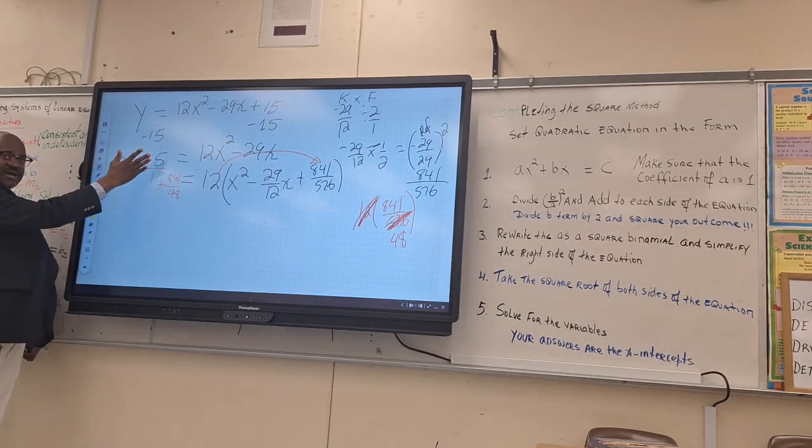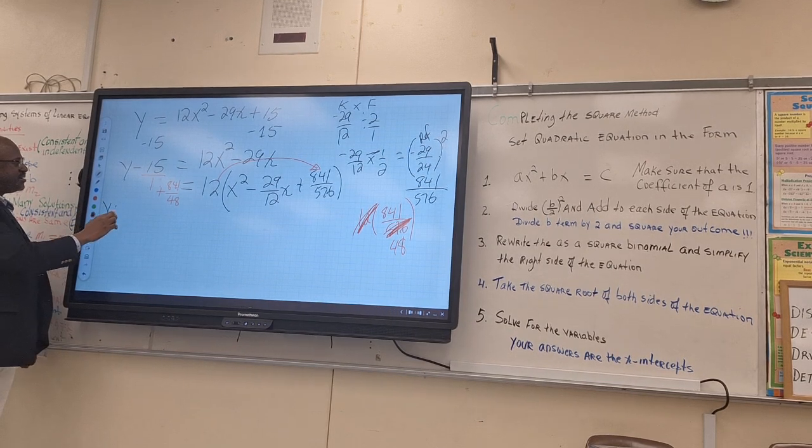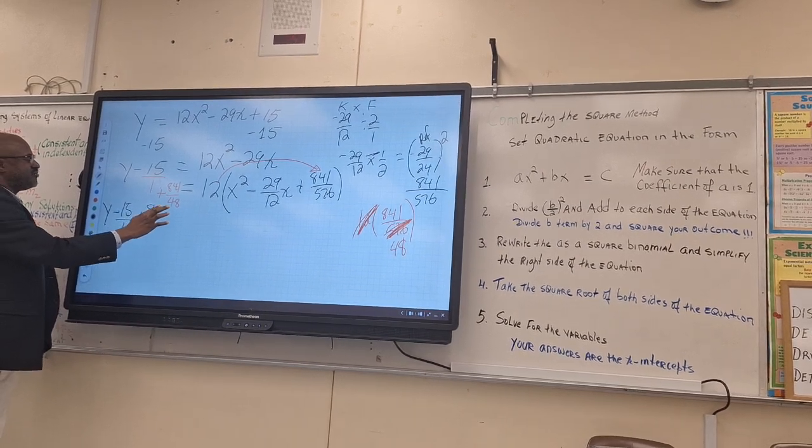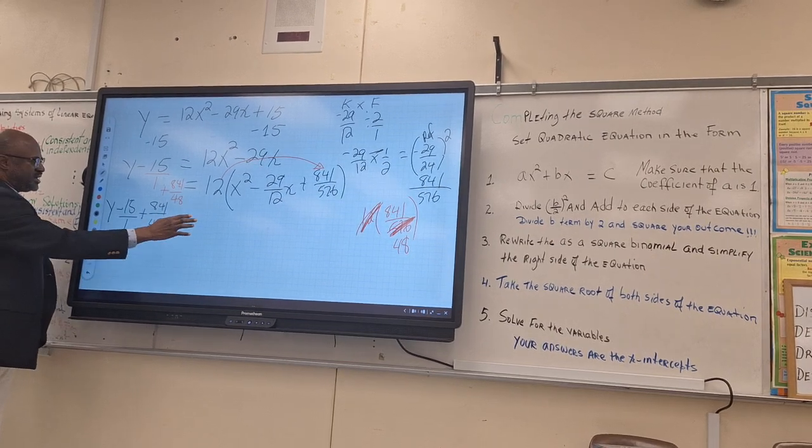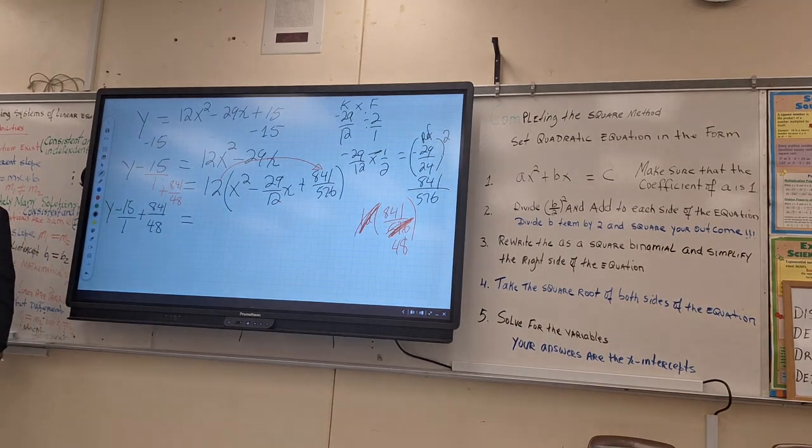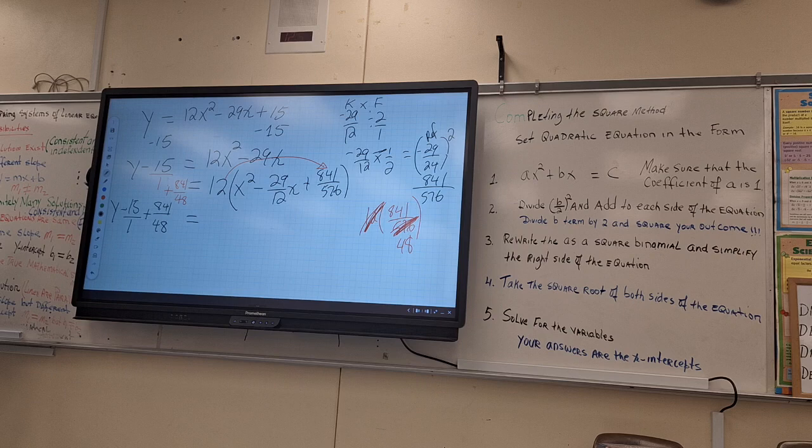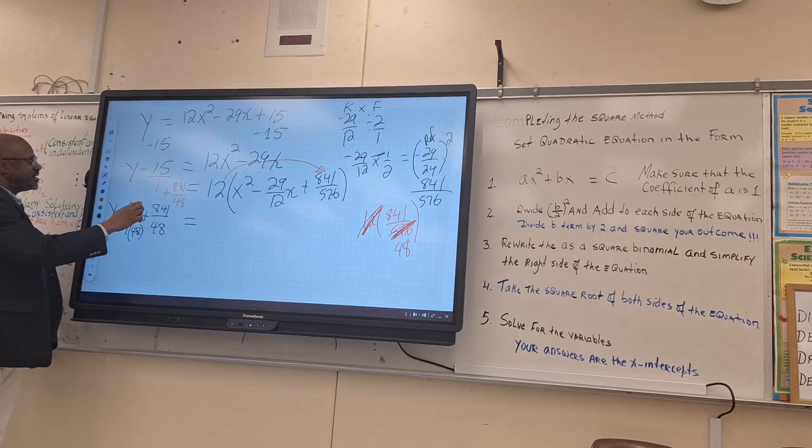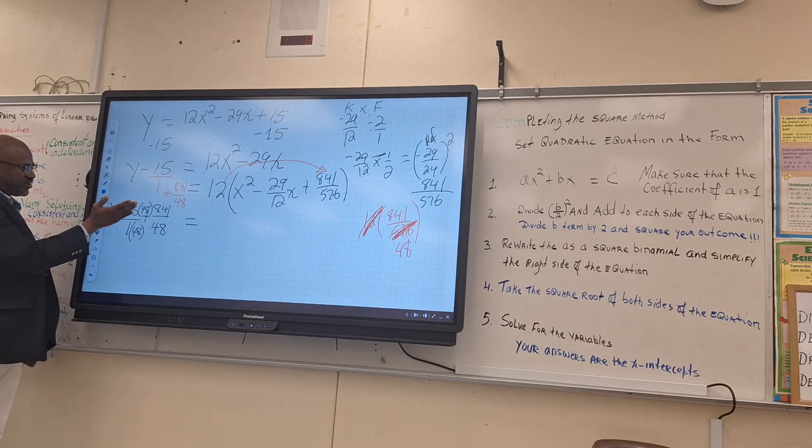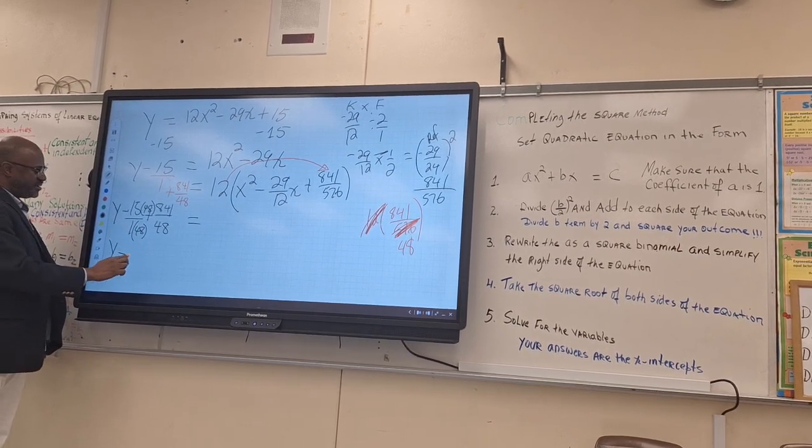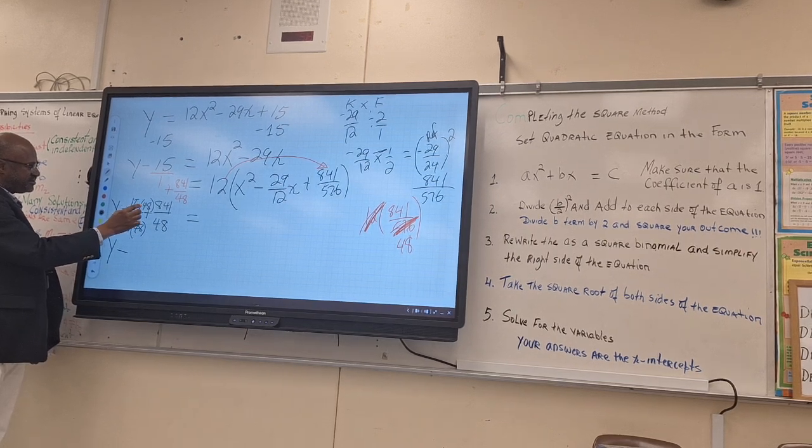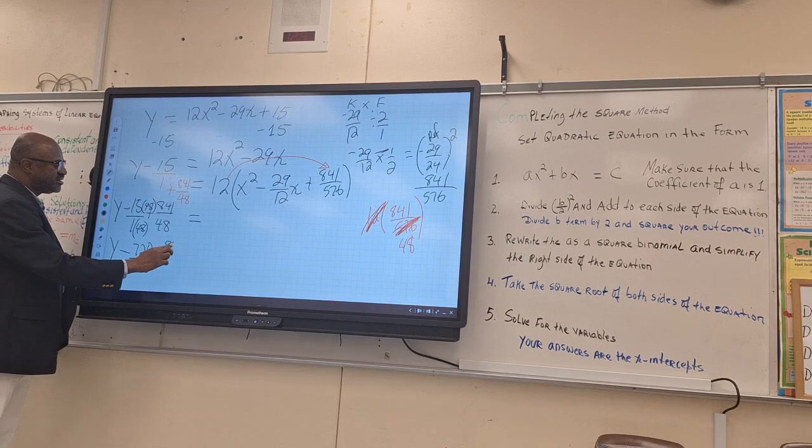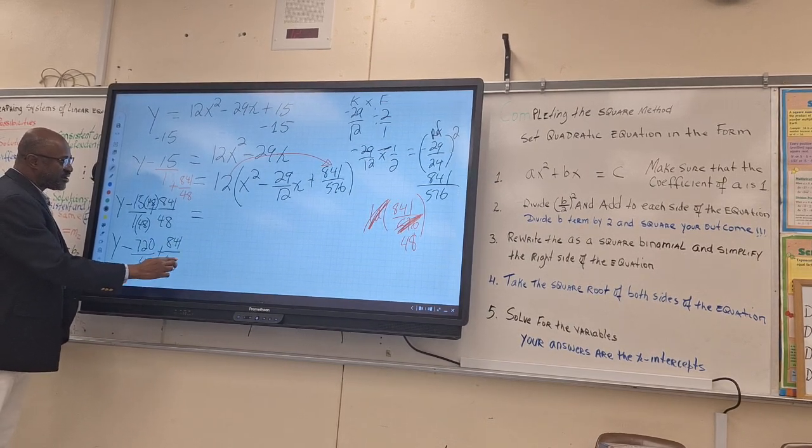Then we're going to add 841 over 48. Now more fraction coming. We have to simplify that. So we'll have y minus 15 over 1 plus 841 over 48 is equal. So let's simplify that this is a mess. We need to have a common denominator. What would be your common denominator on that side? 48. Then we multiply this by 48 and multiply this by 48.